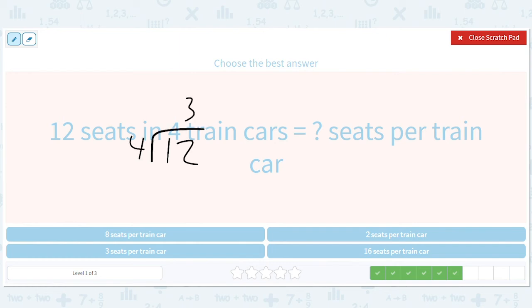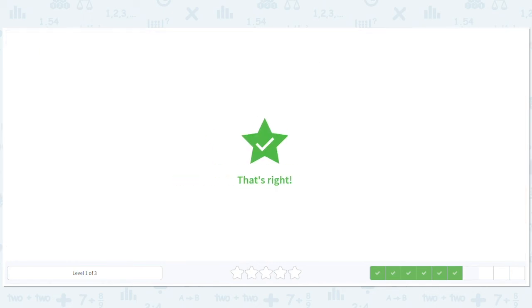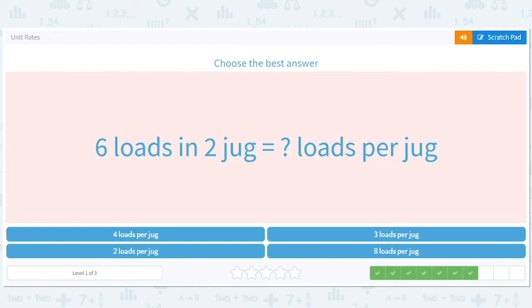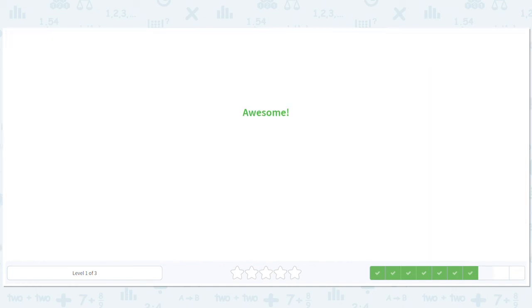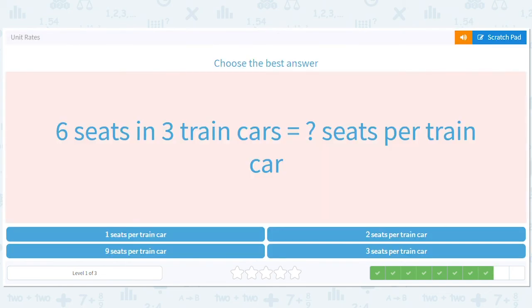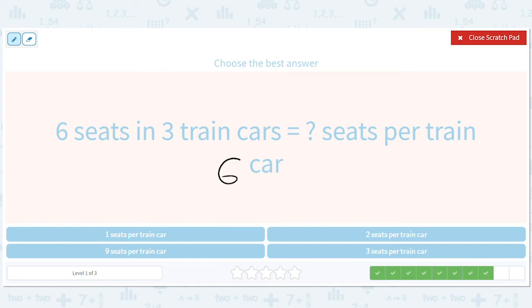Three, 3 seats per train car. Six loads in 2 jugs, how many loads per jug? 6 divided by 2 equals 3 loads per jug.